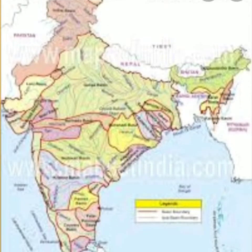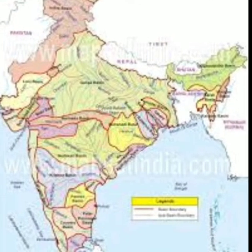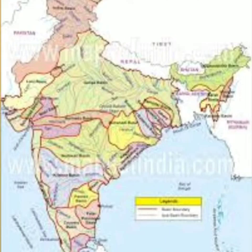The Indus River System is in the northwest. The Indus River originates from the Himalayan mountains, near Mansarovar Lake in Tibet, and enters India in the Ladakh district.